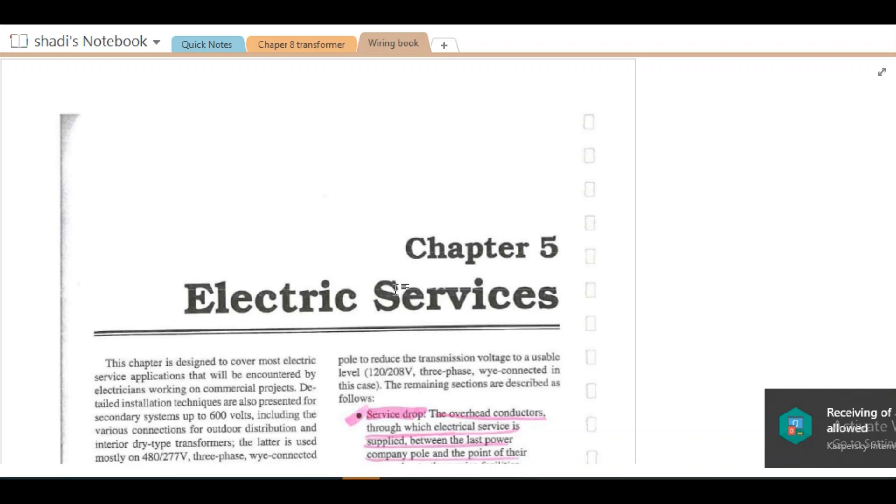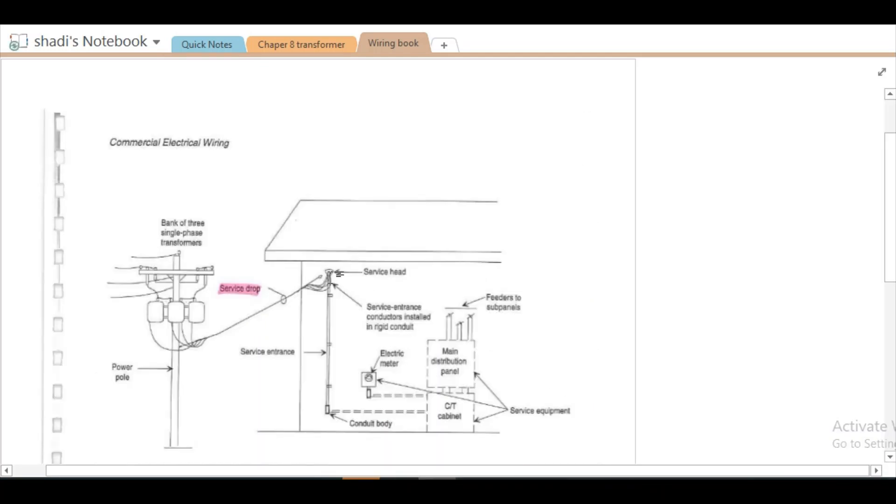Salam alaikum. As we agreed, we're going to start with the service entrance, which is Chapter 6. This chapter concerns all the equipment starting from the transformer, which will be connected to the utility, down to all the equipment that will be connected to your facility. The first and most important equipment is the transformer, which is why I'm going to jump directly from Chapter 5 to Chapter 8, which covers transformers.